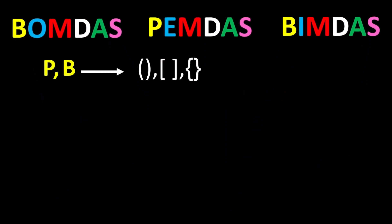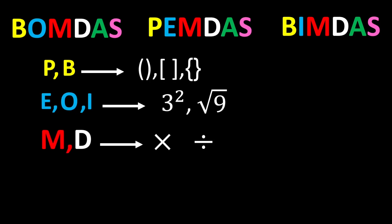P stands for parentheses, and B stands for brackets. E stands for exponents, while O stands for orders, and I stands for indices. M and D stand for multiplication and division. And A and S stand for addition and subtraction.